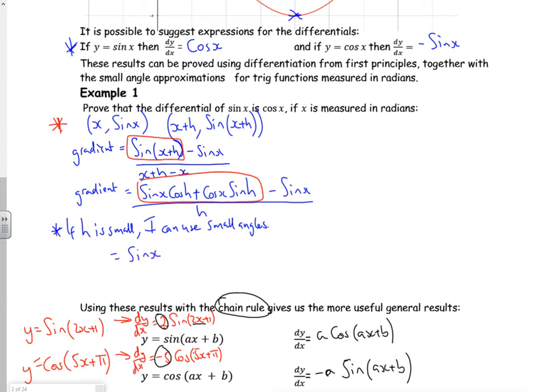sine x. Now then, this cos of h changes to 1 minus 1 half h squared, because that was the small angle stuff we did, plus cos x. This bit for sine of h changes into h. Then I've got a minus sine x over h. There.